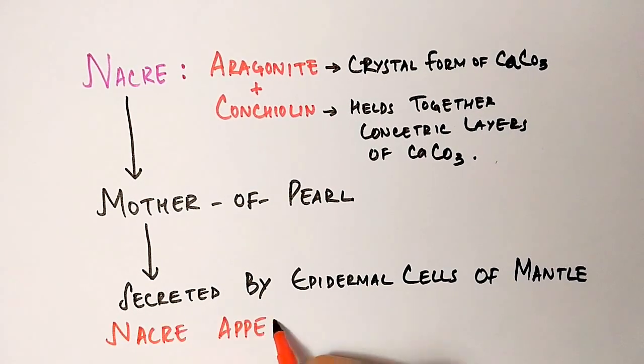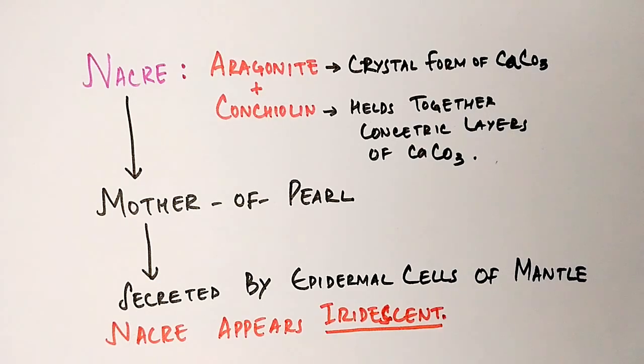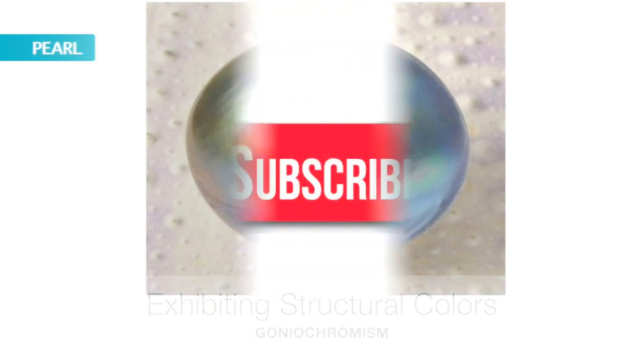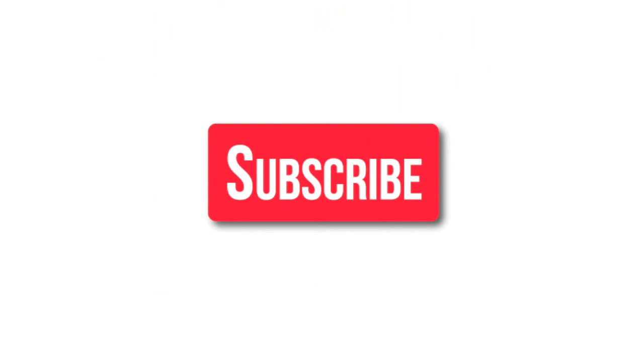Pearl shows iridescence. Iridescence is a property of a substance which when viewed from different angles shows different colors. It occurs only because the thickness of aragonite platelet is close to the wavelength of visible light. That's why it shows all the structural colors in it. That's why pearl appears so beautiful. Thanks for watching the video. Do share and like this video and do not forget to subscribe this channel.